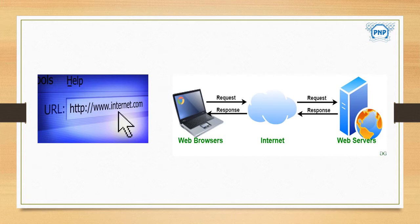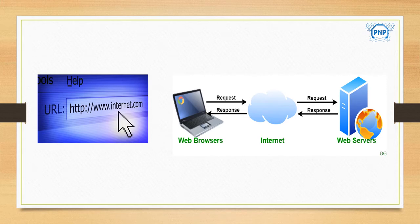The URL of a website is entered in the address text box of the browser. The web browser, called the client, uses IP to send the URL on the internet. The internet routers examine the request, identify the requested web server, and send the request to the web server that hosts the site.